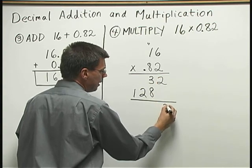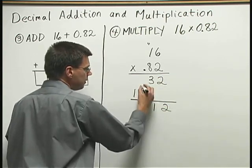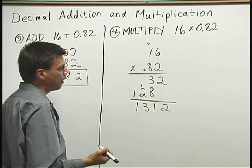And I'm going to add. I have 2. 3 plus 8 is 11. 1 plus 2 is 3. And a 1 in front.